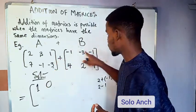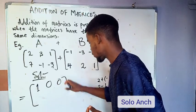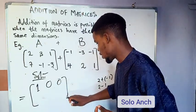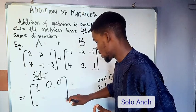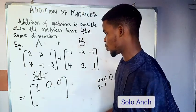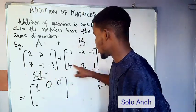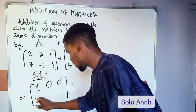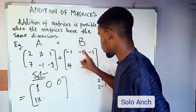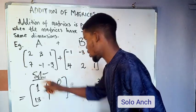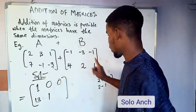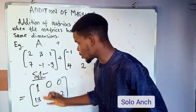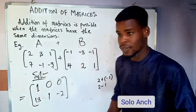Then one plus negative one is zero — two numbers with opposite signs and the same magnitude give zero. Next, seven plus four gives 13. Then negative one plus two gives positive one, same as the first result. And negative three plus one gives negative two. So this is the sum of the two matrices.